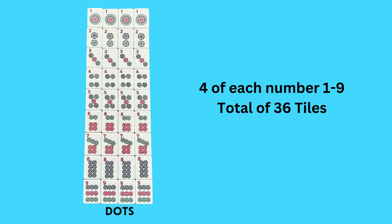Then we have our dots. This suit tile doesn't have any primary color, but we're going to talk more about that a bit later. There are four of each of these, also numbered 1 through 9, for a total of 36 tiles.